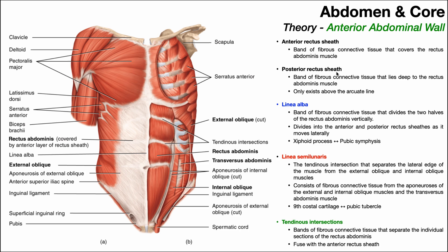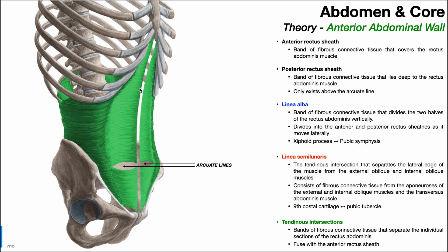We also have a similar posterior rectus sheath — a band of fibrous connective tissue that lies deep to the rectus abdominis muscle. If we peeled off the anterior rectus sheath and reflected the rectus abdominis muscle, we would see the posterior rectus sheath underneath. An important note: the posterior rectus sheath only exists above the arcuate line, which is roughly at the level of the navel or umbilicus — slightly higher or lower in some individuals.